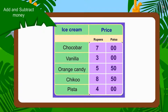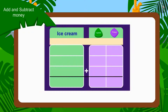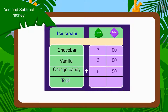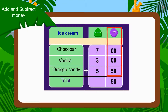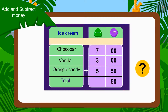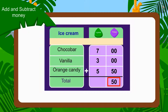Come, let's solve it together. To know the total amount, we have to add the prices of all three ice creams. We will first write the price of all three ice creams in rupees and paise. Now we will add the amount of paise first. Can you tell the total amount of paise? Right — 50 paise. Then we will add all the rupees.